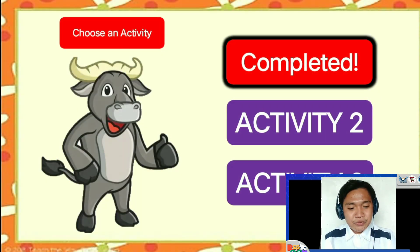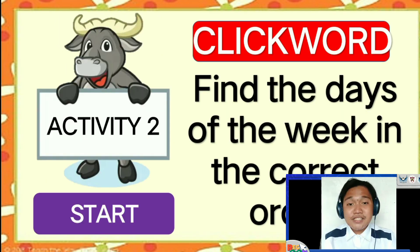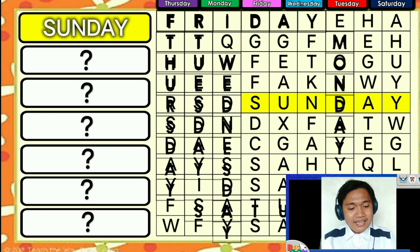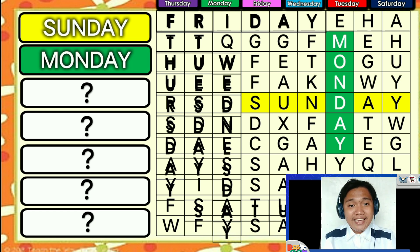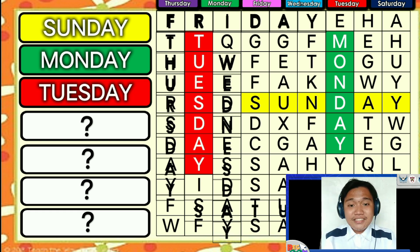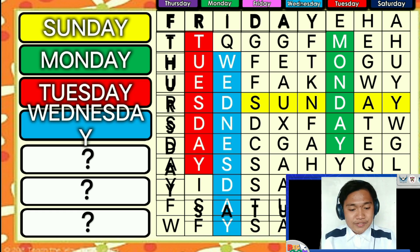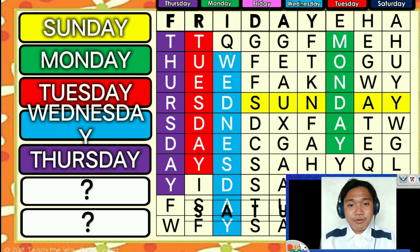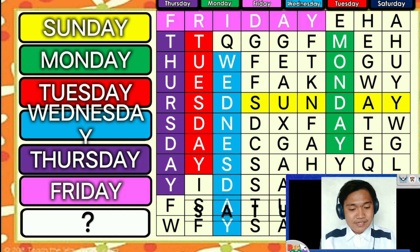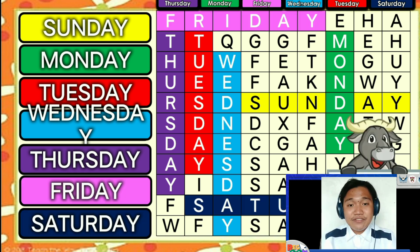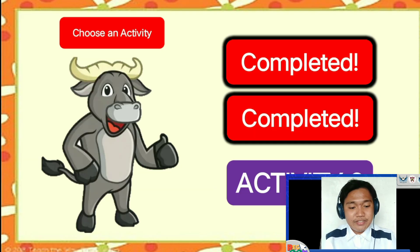Activity 2 is Word Finder. It asks the pupils to identify and arrange the days of the week by finding the correct words or days from the jumbled letters. This is also interactive and gives feedback like Activity 1.